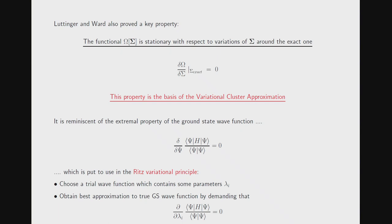We could devise some trial self-energy and plug it into the omega functional to determine expansion coefficients. But in our functional omega, this innocently-looking F[Σ] is the Legendre transform of phi[G], which was defined as a sum over infinitely many Feynman diagrams — absolutely impossible to evaluate. So we can never evaluate F[Σ] for a given trial self-energy.